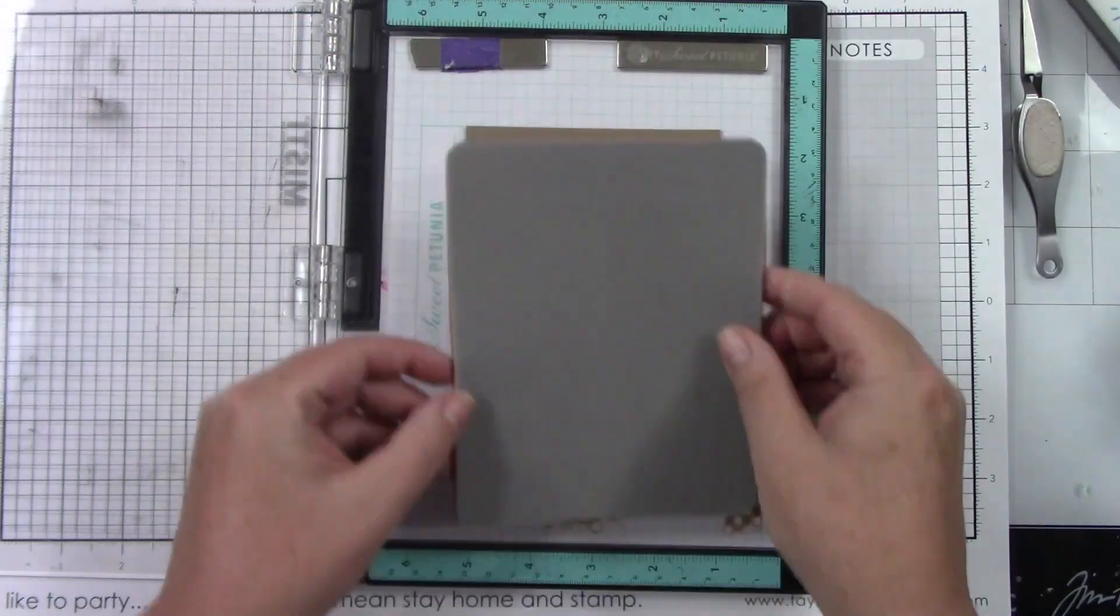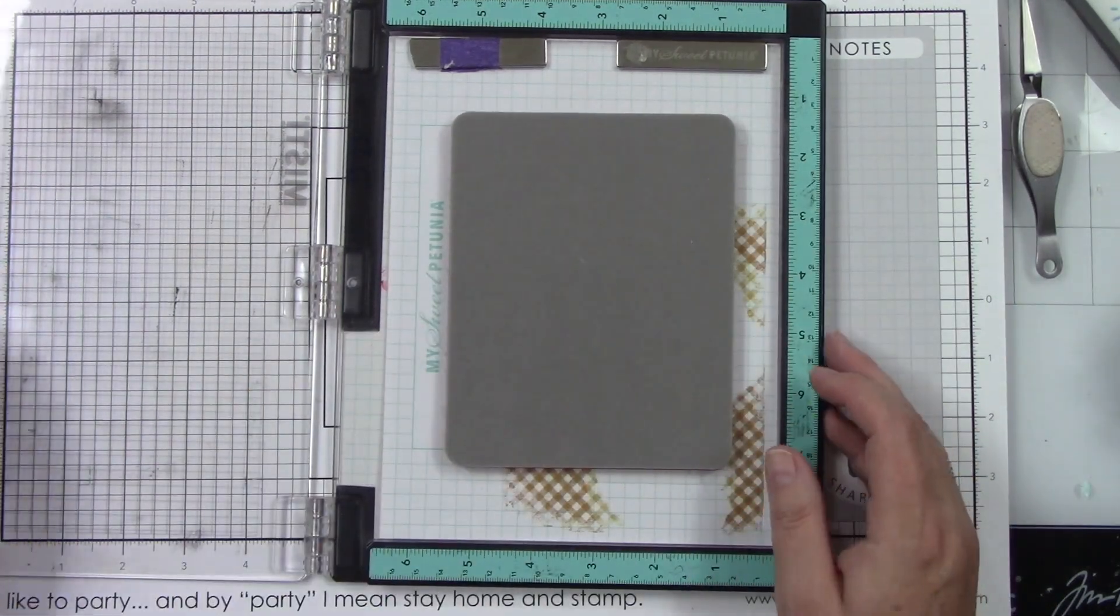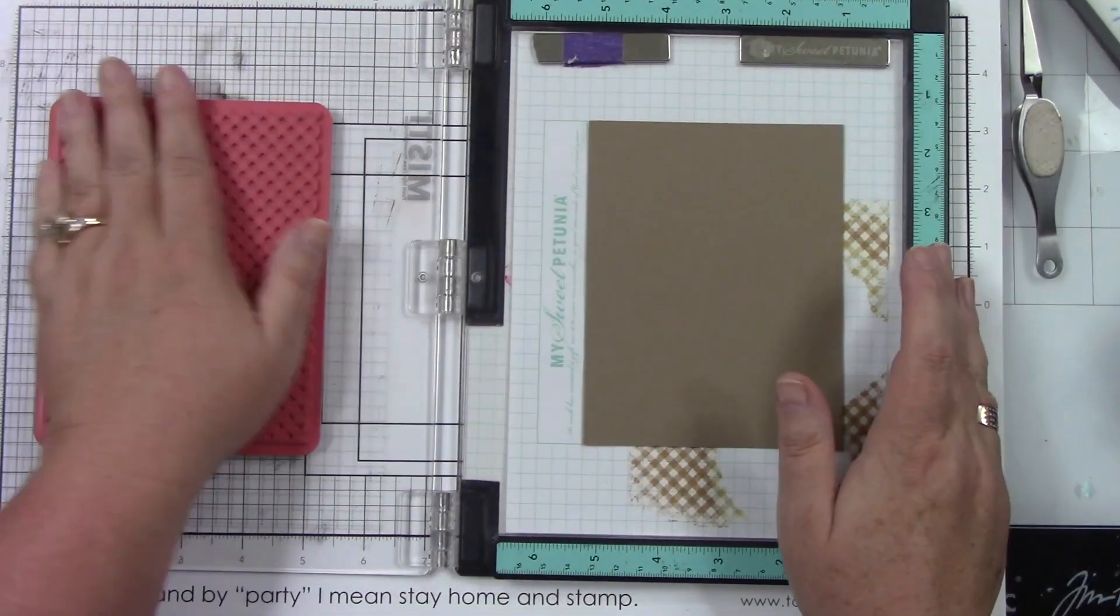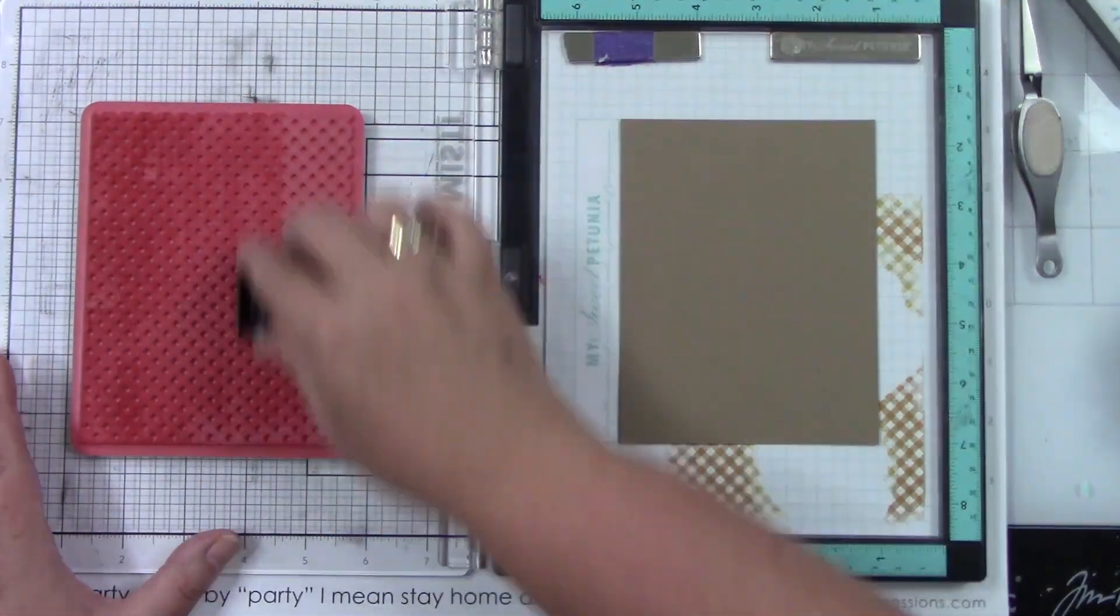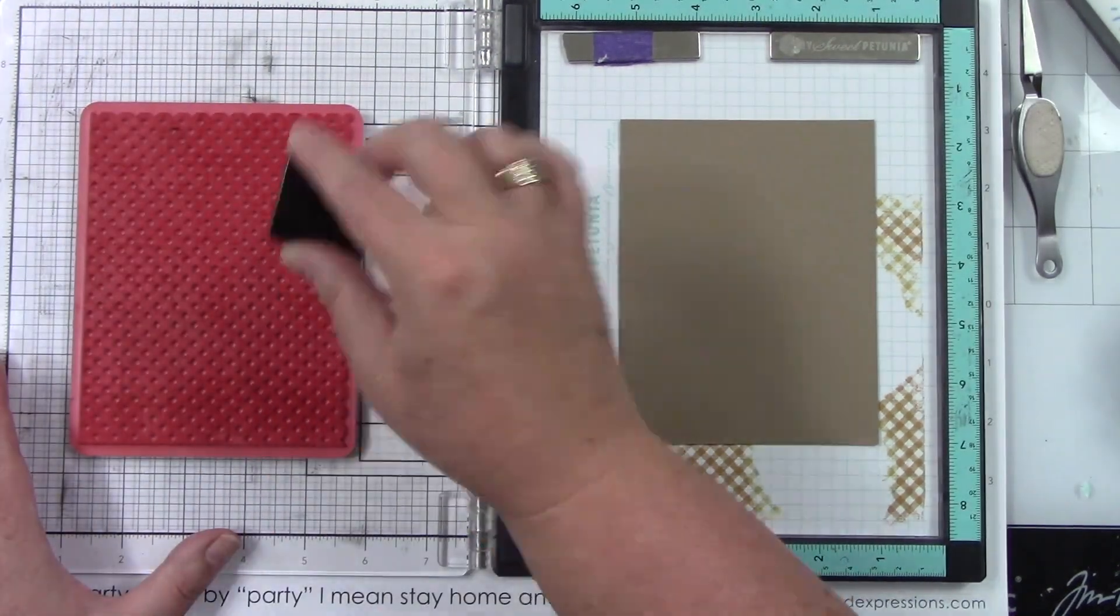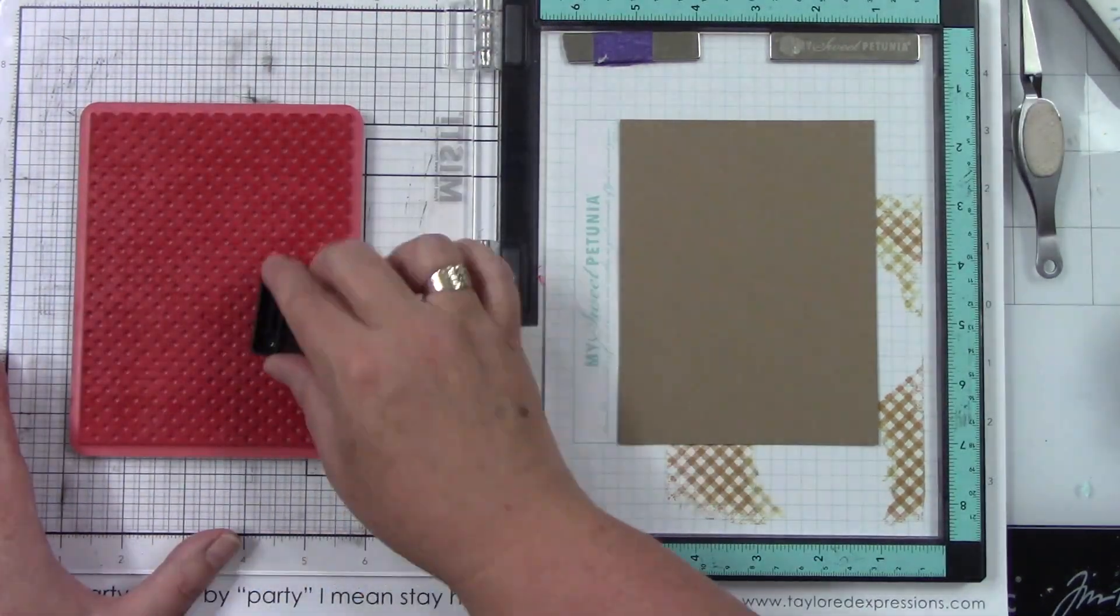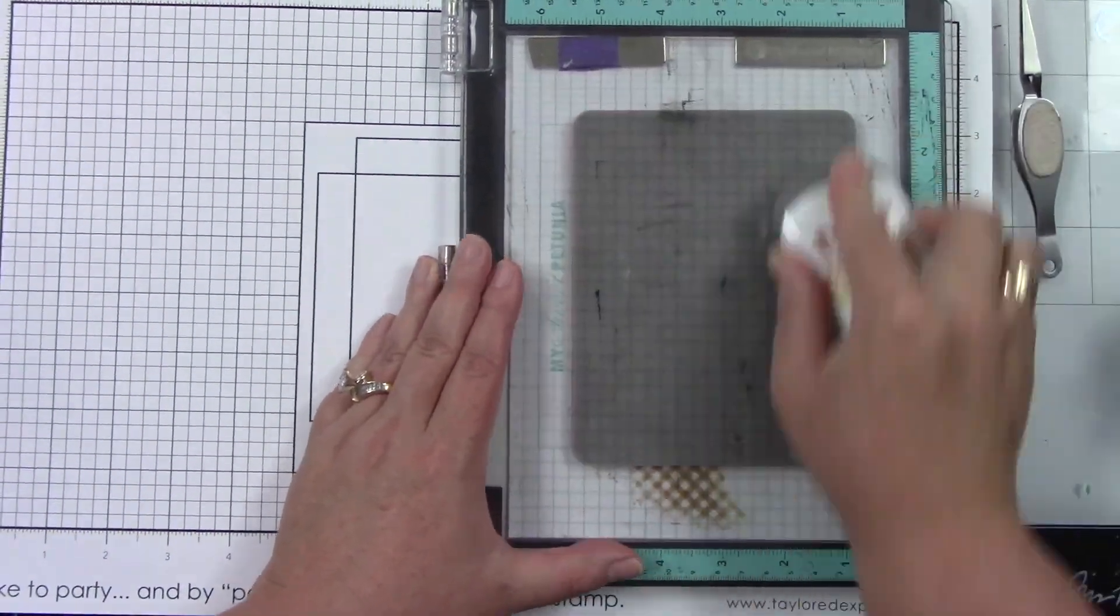Then on another piece of Latte cardstock I am using the Checking In background with Cherry Pop ink. I want that to be red, and then I'm going to do another one using the new Winter Green cardstock.